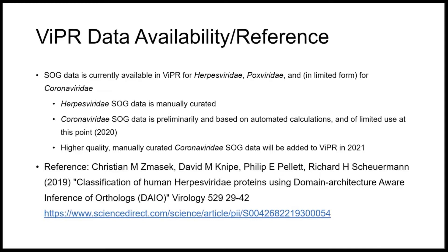Unfortunately, this data is not in VIPER yet. For herpesviruses we have SOG data that is manually curated and available in VIPER. For Coronaviridae there is SOG data in VIPER 2, but it's preliminary — calculated automatically and not manually curated, so it's not very useful yet. At some point, probably in the winter of 2021, I will upload much better SOG data for Coronaviridae. Our work in herpesviruses has been published and described in detail, and pretty much the same approach will apply to the coronavirus family.